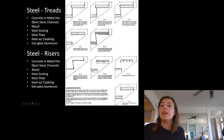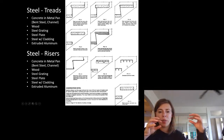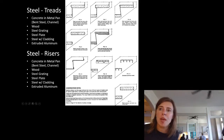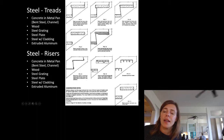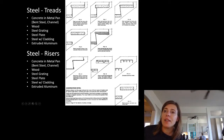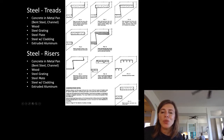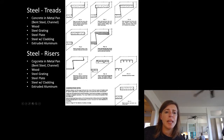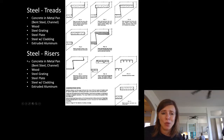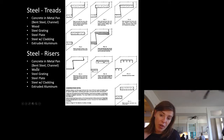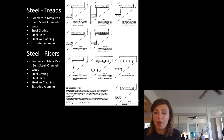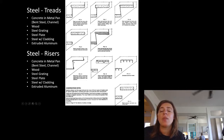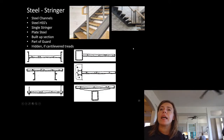Extruded aluminum treads are another option — pushed or pulled through a die to create a cross-section shape, essentially a series of small beams melded together as one element. The risers usually match the tread material. Whatever you're doing for your tread, you're probably doing for your riser — unless you have no riser at all.